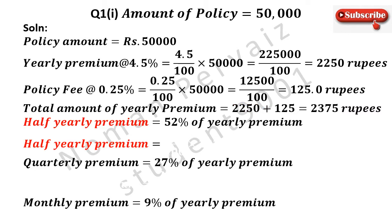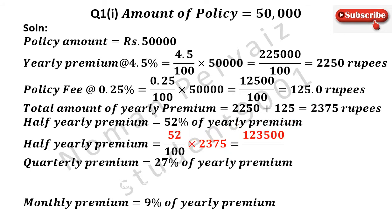Now we need to calculate half yearly premium, which is equal to 52%, percentage sign is removed by dividing the whole term with 100, multiplied with total amount of yearly premium which is 2375. 52 multiplied with 2375 becomes 1,23,500, divided by 100 comes as it is. Now if we divide 1,23,500 by 100, then it becomes 1235 rupees.